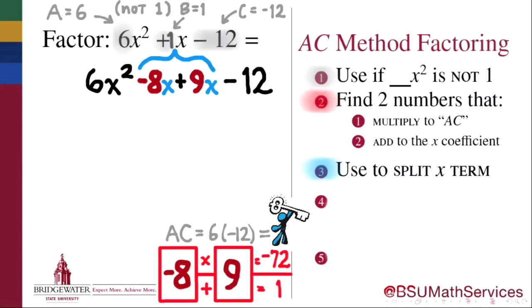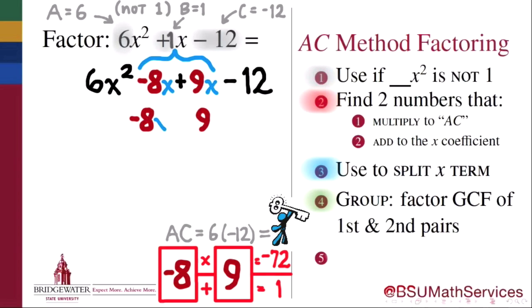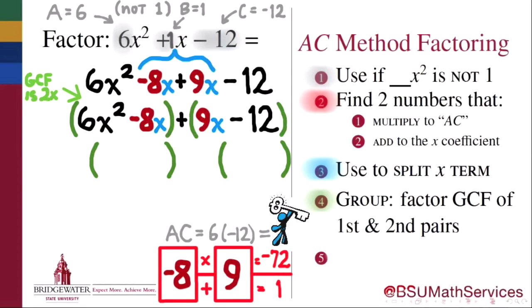What that allows us to do now is to take the first pair of terms and the second pair of terms and to treat them each as their own factoring problem. In other words, what we should have is that the first pair of terms has a greatest common factor that may be brought out, and the second pair of terms should also have a greatest common factor that can be brought out. So here, 6x squared minus 8x has a greatest common factor of 2x, so we can factor 2x out of the first pair of terms. Meanwhile, 9x minus 12 has a greatest common factor of 3, so we can factor a 3 out of that pair of terms.